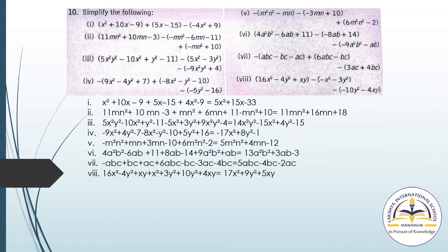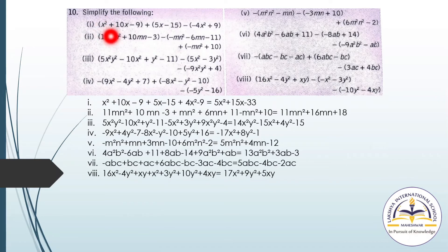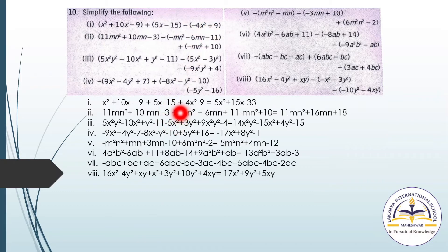Question number 10: Simplify the following. You have to find the values by solving the terms. First, multiply with the signs. Here: x² plus 10x minus 9 stays as is (positive bracket). If there is a minus sign outside a bracket, multiply each term inside by minus. Minus times minus gives plus, so plus 4x². Minus times plus gives minus 9. Now collect like terms: x² terms give 5x², x terms: 10x plus 5x gives 15x.